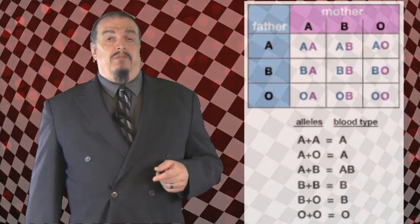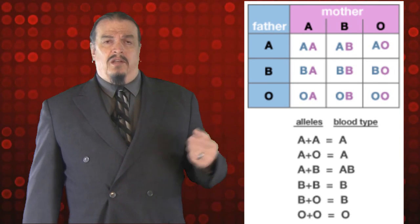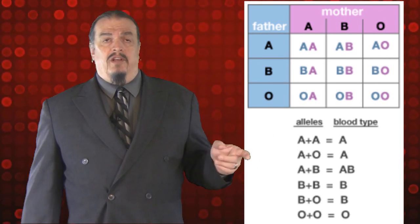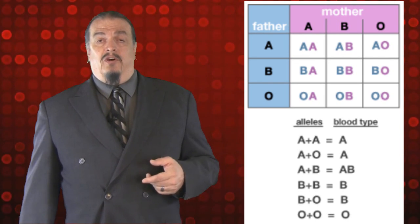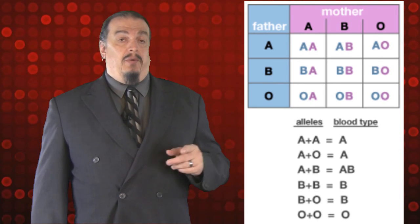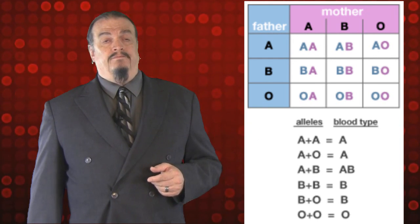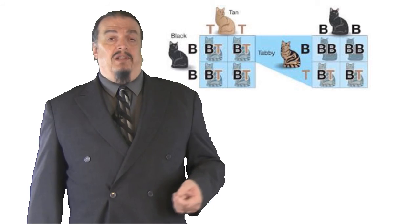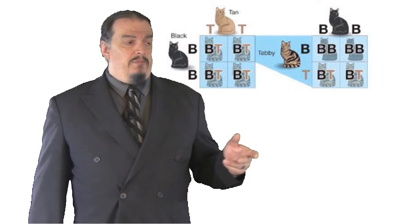In human blood types, A and B are co-dominant and O is recessive. Unlike simple Mendelian dominance where traits are completely dominant or recessive, blood type expression is co-dominant. A from the mother and A from the father results in blood type A, as expected. A dominant A and a recessive O produces blood type A because A dominates O. However, when you have a dominant A and a dominant B, you get AB blood type because they are co-dominant. Why do tabby cats have stripes? Again, co-dominance. Some traits in humans are simple Mendelian, like attached earlobes; others like wavy hair result from incomplete dominance; and still others like blood type are caused by co-dominance.